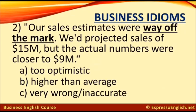Number two. Our sales estimates were way off the mark. We'd projected sales of 15 million, but the actual numbers were closer to 9 million. Does 'way off the mark' mean: A. Too optimistic, B. Higher than average, or C. Very wrong or inaccurate?